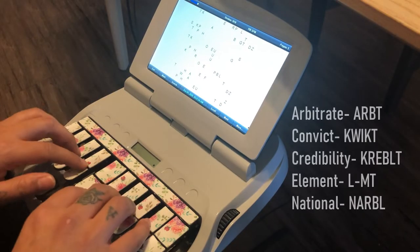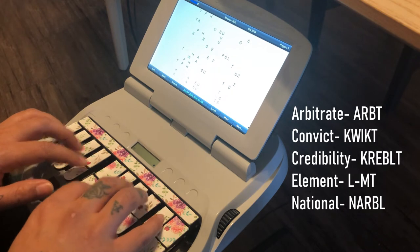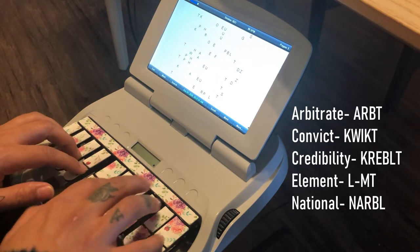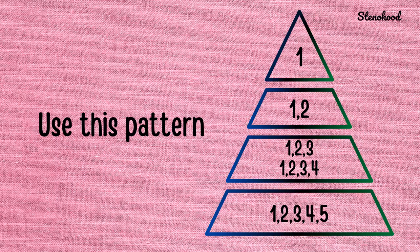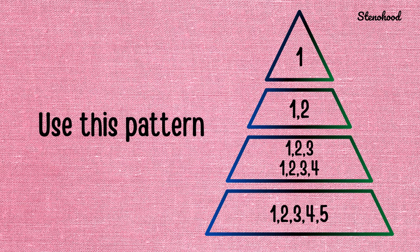Now that we know what a pyramid is, let's grab a list of words and show you how to pyramid. As you can see in this image, we have a pyramid. There's one word at the top, and on the left side you can see the list of words that we're going to be using. And essentially, this is the pattern that you're going to be using when practicing a pyramid.